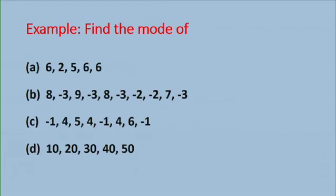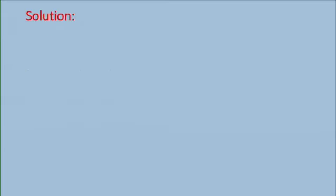Let us now look at some other examples. Find the mode of part A: 6, 2, 5, 6, 6. So the solution will be 6. This is because the number 6 occurs three times.